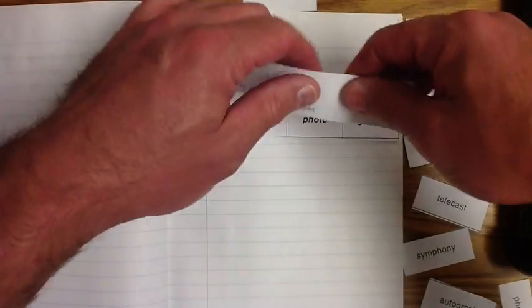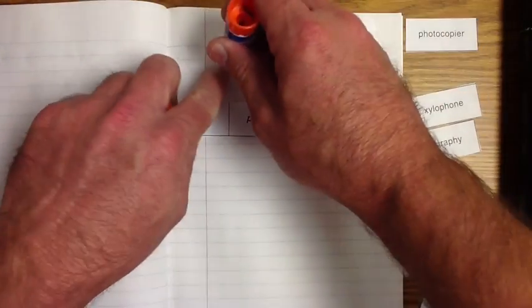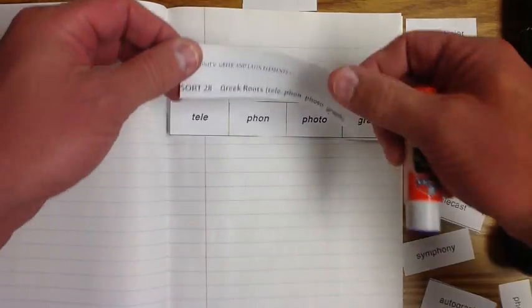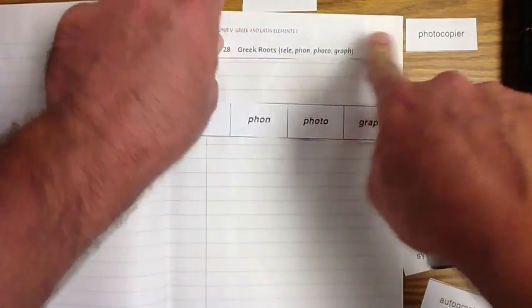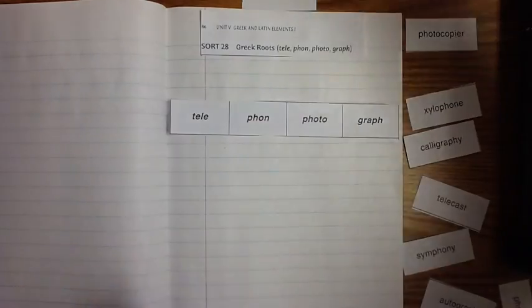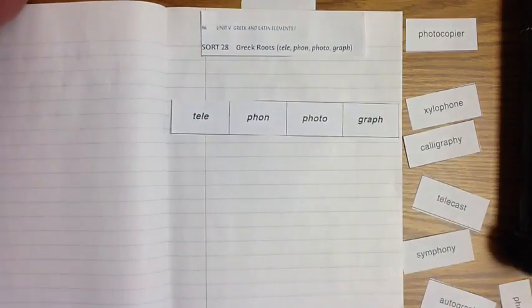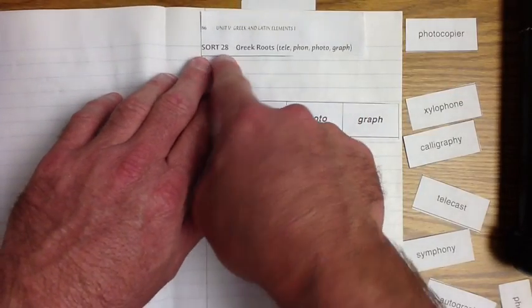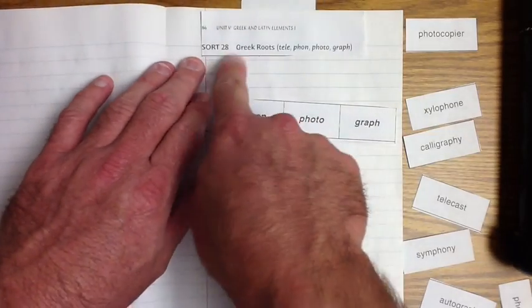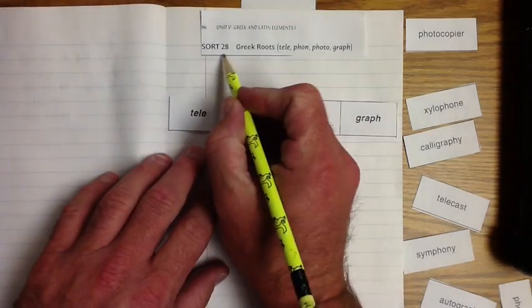First thing we're going to do is I like to take off that little piece there, and then we're going to glue this to the top. If you're not going to glue this, you need to write out Sort 28 Greek roots and write it exactly like that. You need to know this so that when you do next week's words, then you'll know which words to do next.